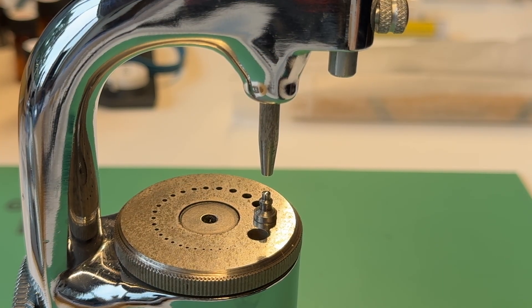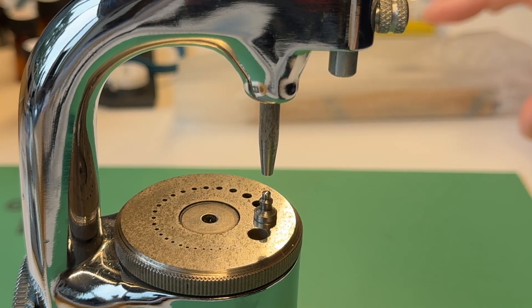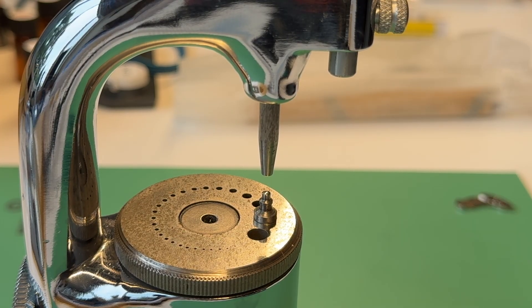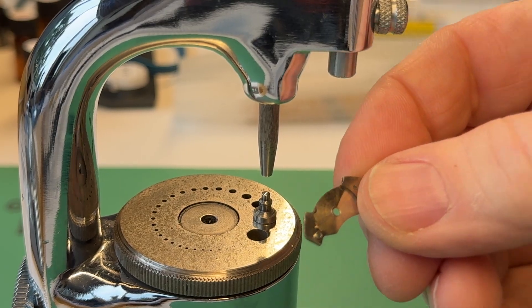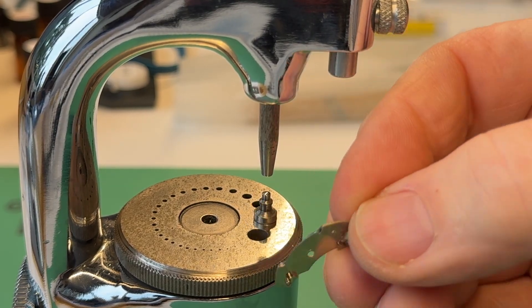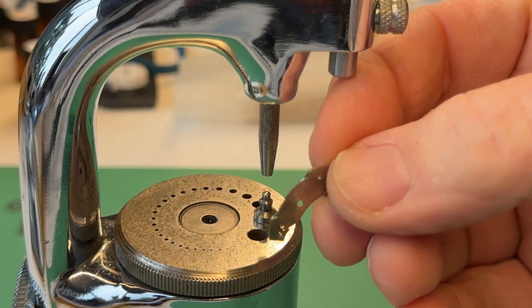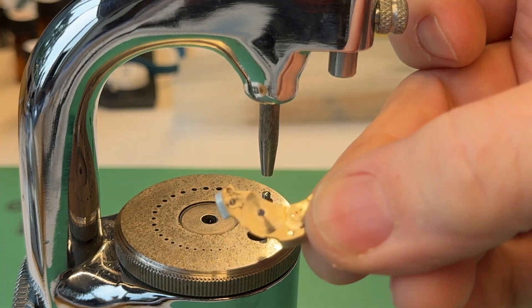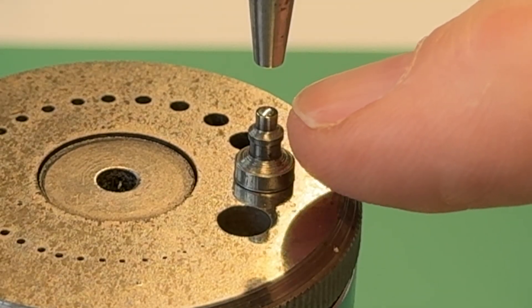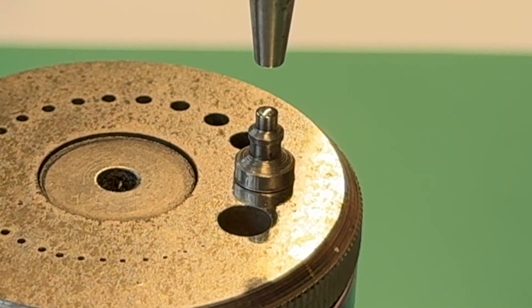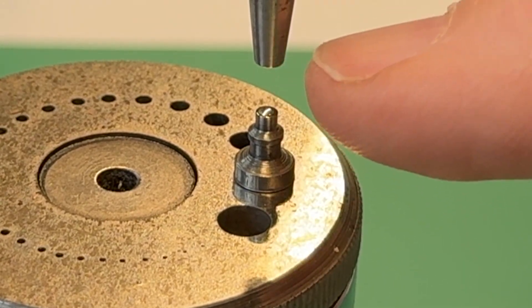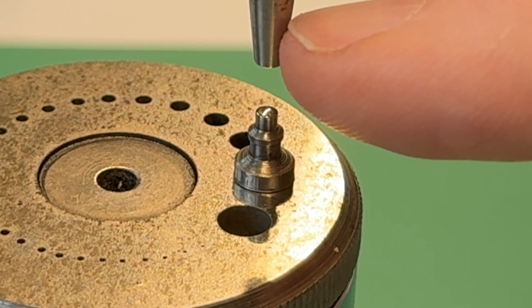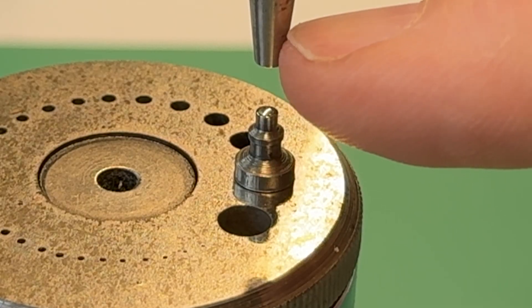Okay, so first I'm going to close down the hole in the mainspring barrel bridge. Yeah, I'm holding it with my bare hands, but this is going to be going into the ultrasonic cleaner after all this is done. So here we go. So what I'm going to use, I'm going to use a round-nosed solid stump to close it from the bottom, and then a round-nosed solid punch from top to close it on top.